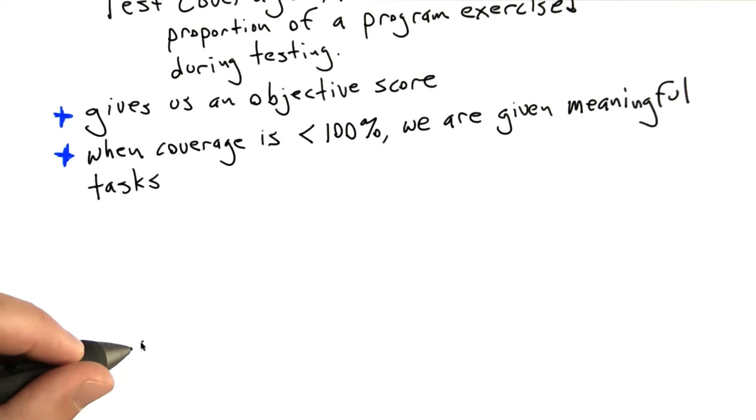On the other hand, there are also some disadvantages. First of all, test coverage, because it's a white box metric that's derived from the source code for our system, is not good at helping us find bugs of omission.